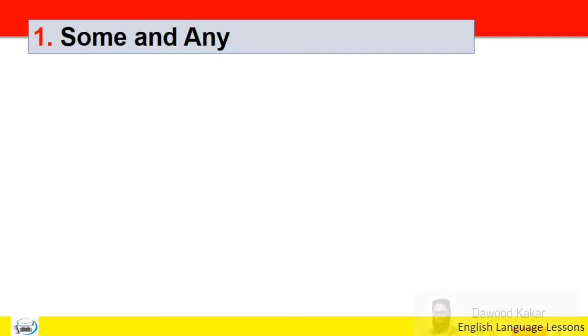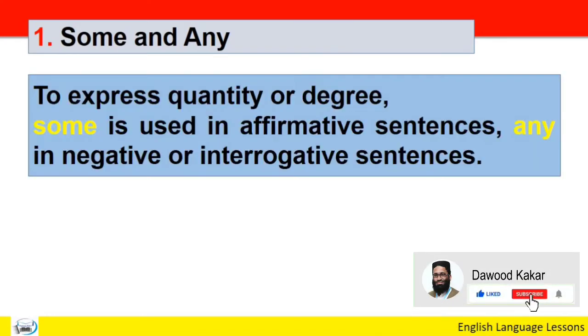First we see some or any use. To express quantity or degree, some is used in affirmative sentences, any in negative or interrogative sentences. Quantity مقدار یا degree کو express کرنے کیلئے some or any use ہوتے ہیں لیکن some کا جو use ہے وہ affirmative sentences میں اور any کا negative or interrogative sentences میں ہوتا ہے.